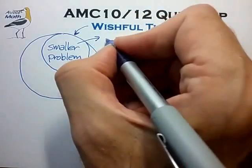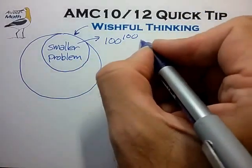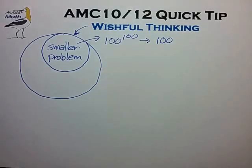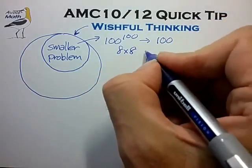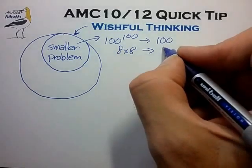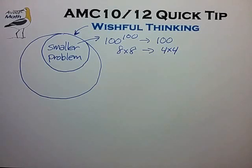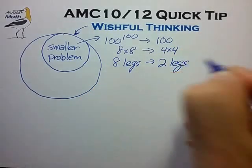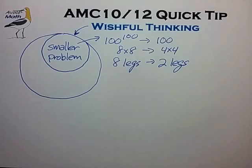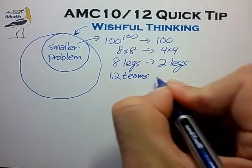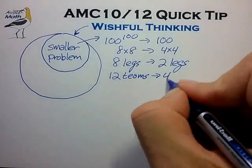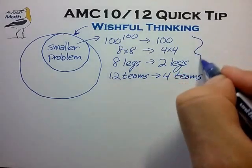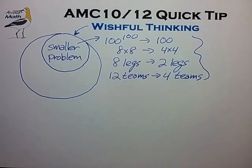For example, if a problem involves 100 to the hundredth power, it's often helpful to insert just 100 to get the problem started. If a problem asks you to analyze something on an eight by eight chess board, it's often helpful to examine the same problem on a smaller board, perhaps four by four. If a counting problem involves a crazy eight-legged creature, you may want to look at the same problem on a creature with two legs. And if a problem involves a tournament with 12 teams, try looking at that same tournament with a smaller number of teams, perhaps four. Each of these substitutions will often lead to insights you just can't get any other way, and it's probably my first go-to method in the set of wishful thinking.